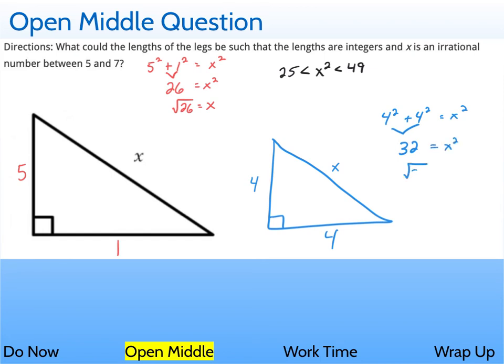Take the square root, get the square root of 32 equals x. It's irrational, it's between 5 and 7. There are tons of other options you could put for this answer as well. So be creative and try to figure out a couple of your own.